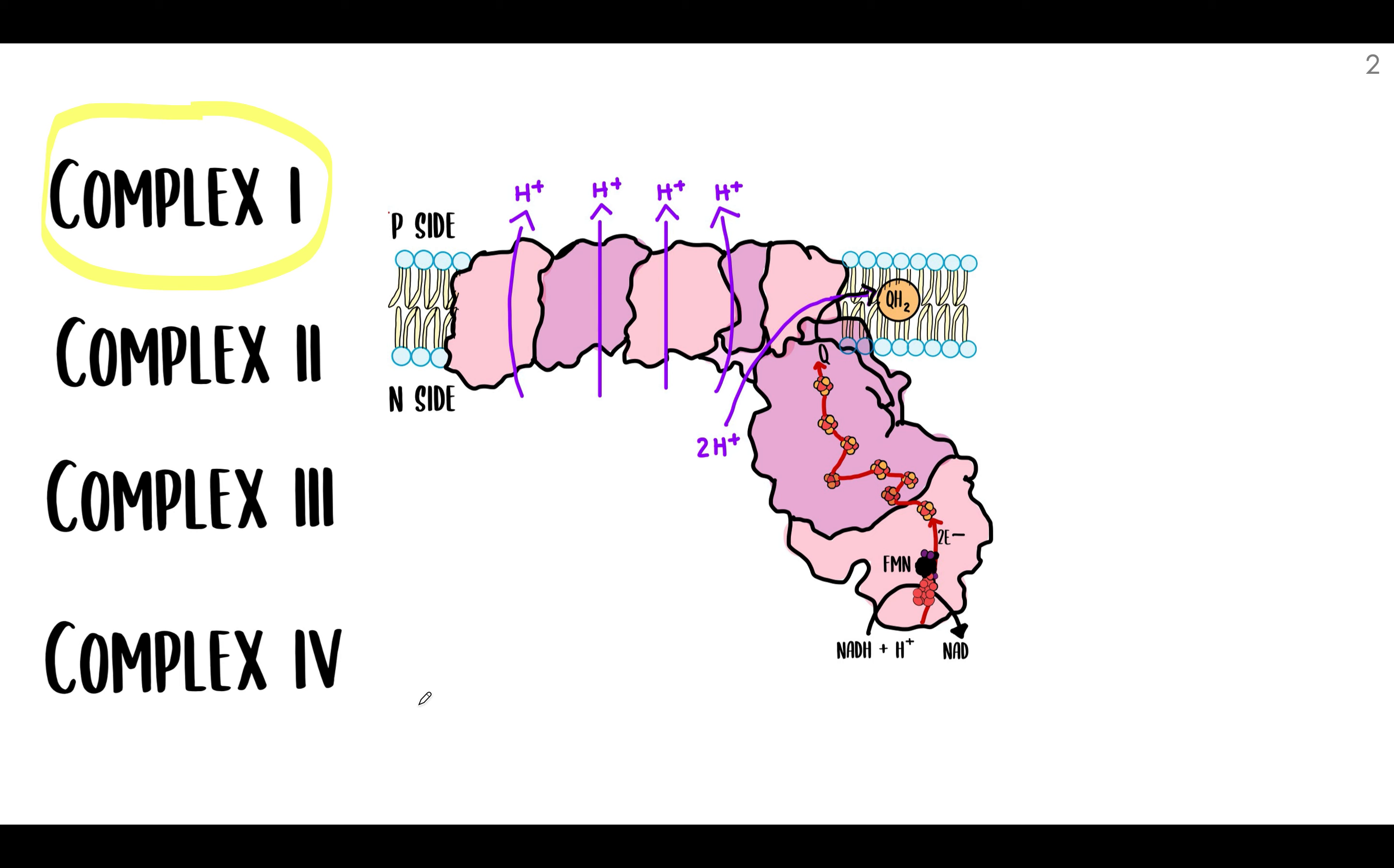So ultimately, those are where the electrons will end up. This complex also acts as a proton pump, and four protons are transported to the intermembrane space per one NADH molecule. This is why we have the downhill flow of electrons and uphill flow of protons. The exact mechanism for the proton pumping is still unknown, but one day we're bound to find out, right?